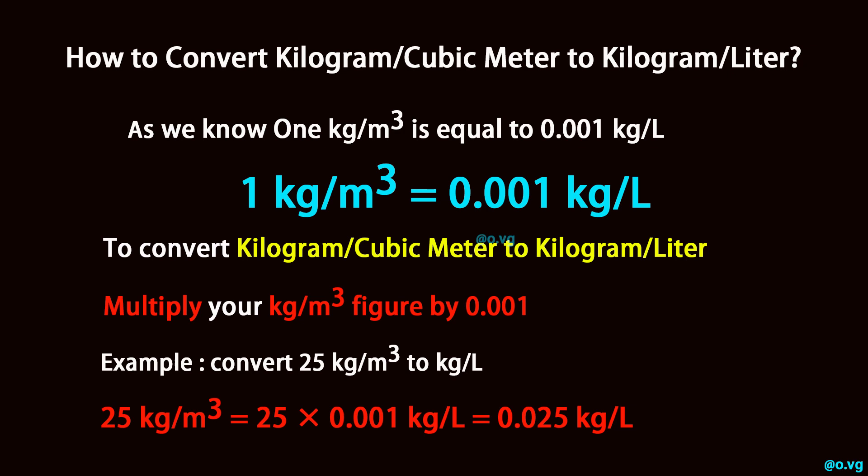Example: convert 25 kg per cubic meter to kg per liter. 25 kg per cubic meter is equal to 25 times 0.001 kg per liter, which equals 0.025 kg per liter.